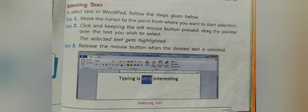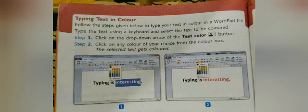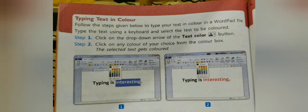Our next topic is typing text in color. To change the color of the text, follow the steps given below. Step 1: Click on the drop-down arrow of the text color button. Step 2: Click on any color of your choice from the color box, and the selected text will change its color. As in the given example, 'interesting' is selected and you have chosen the color red, so 'interesting' will change its color to red.